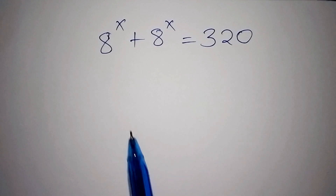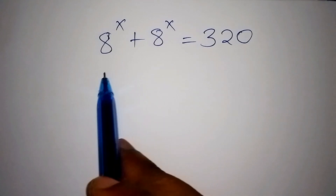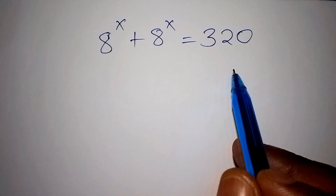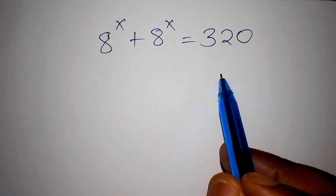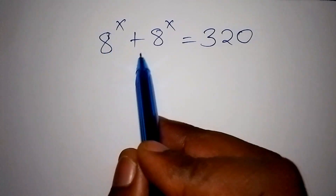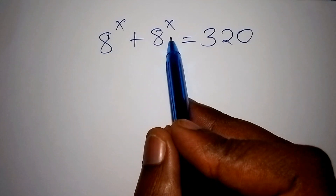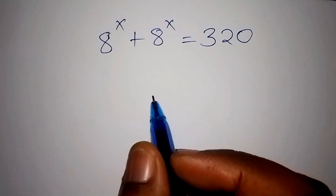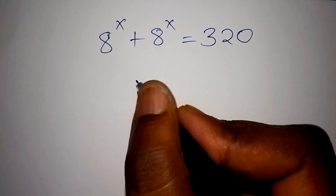Hello viewers, welcome. Work out this math problem within the shortest time possible. We have 8 to the power of x plus 8 to the power of x equals 320. Let us now start with the solution.